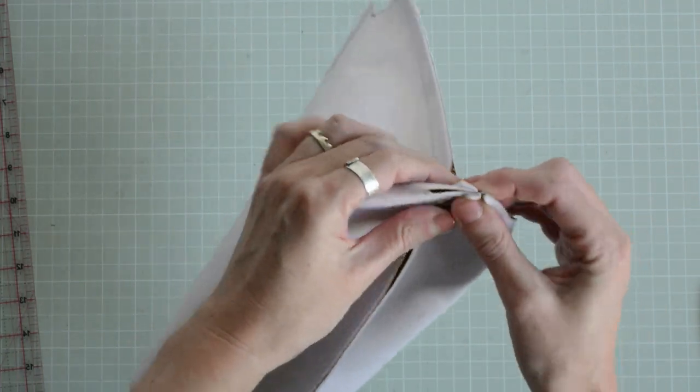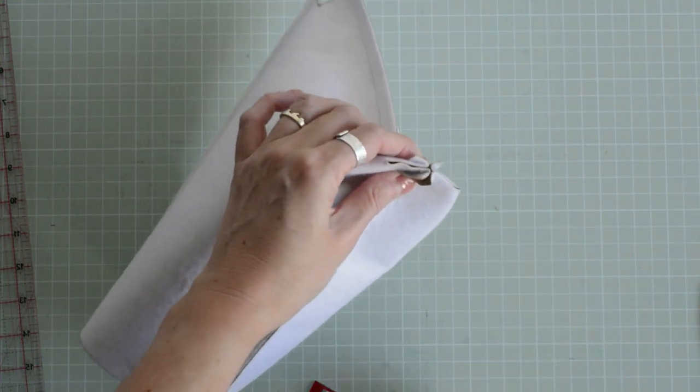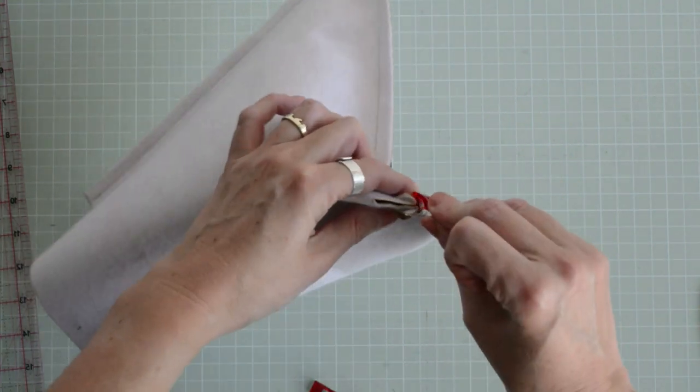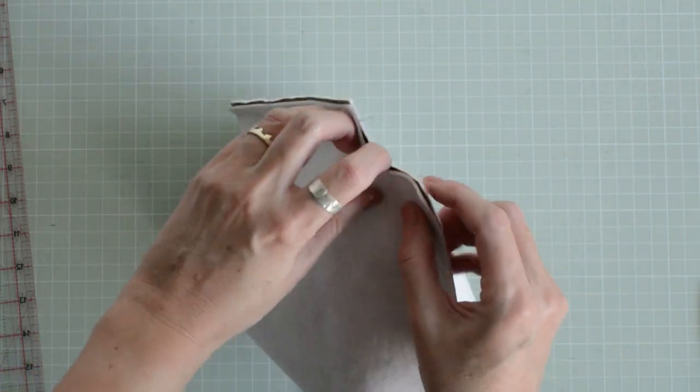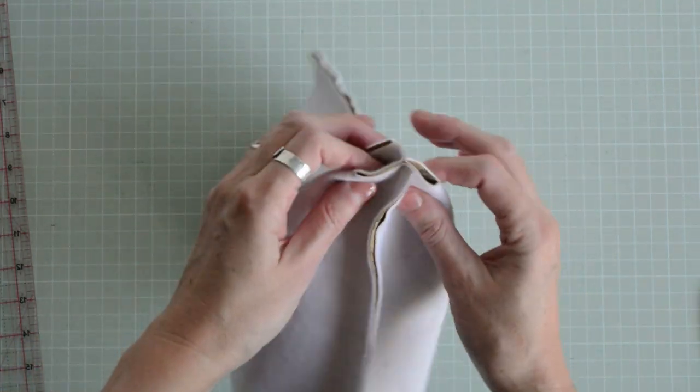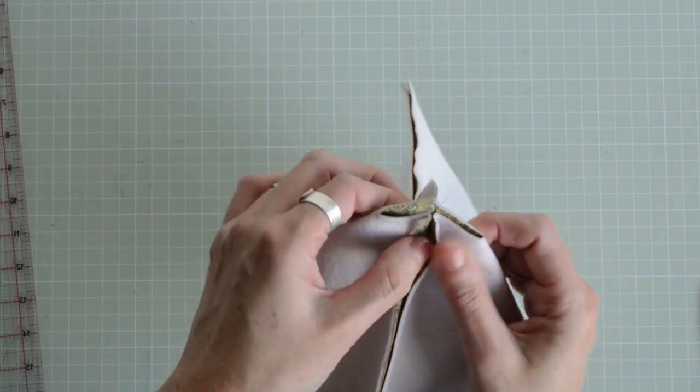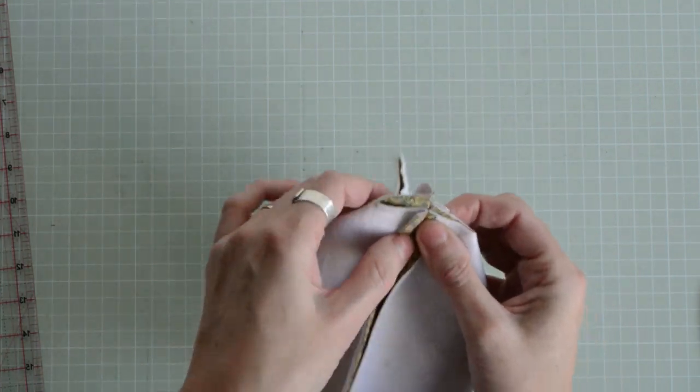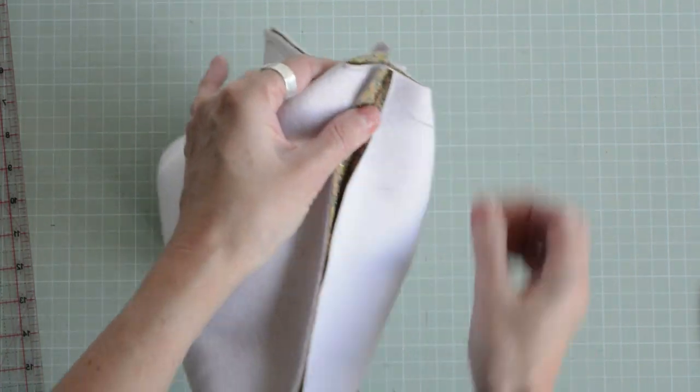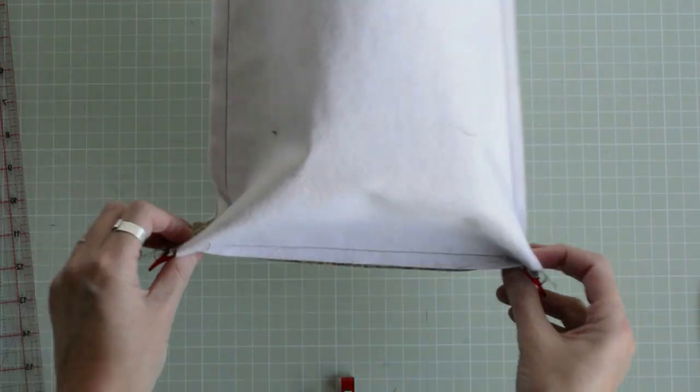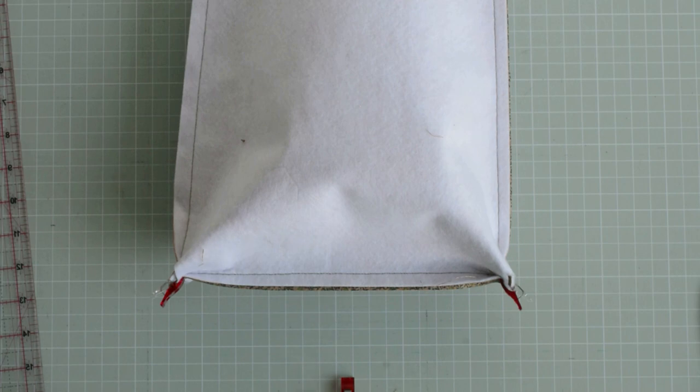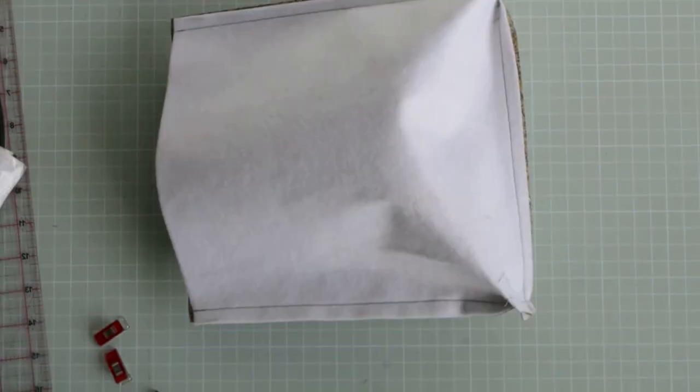Now let's box the corners by folding in the cut-out square so the edges meet. As you can see, this is forming a base to the bag. Just align your side seam with your bottom seam and open out your seam allowance. And clip in place before stitching. Machine stitch that, backstitching at each corner. Right, let's turn this bag the right side out.